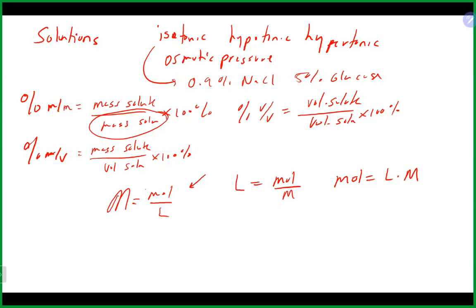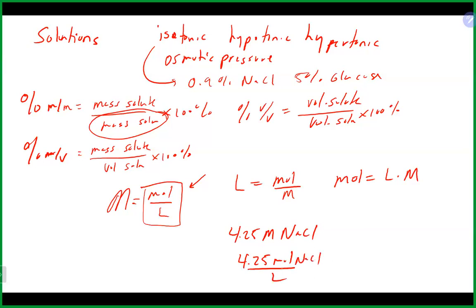When doing a calculation, I recommend not using just the big M — instead, write it out as moles per liter so you can clearly see both units. For example, a 4.25 molar sodium chloride solution becomes 4.25 moles per liter of sodium chloride, so you can see that liters are on the bottom and moles are on top. You can also flip it and use it like a conversion factor in dimensional analysis.